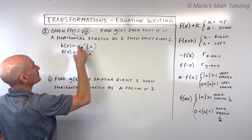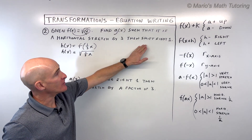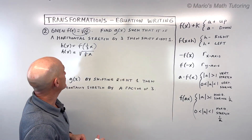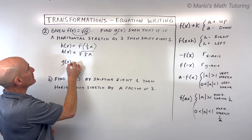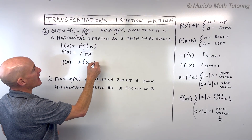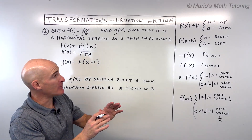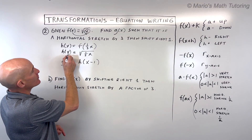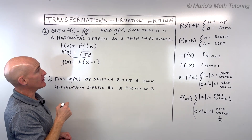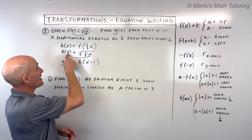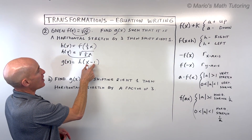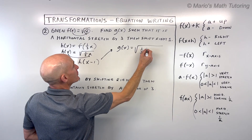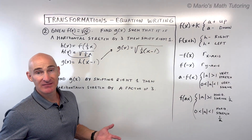Now the next step is to shift right one. Shifting right or left uses the notation grouped with the x. So g of x equals h of x minus one — why minus one? Because it's the opposite: minus one actually shifts it right one. Whatever's in the parentheses goes in place of x on the right, so we replace x with the quantity x minus one. That gives us g of x equals the square root of one third times the quantity x minus one. That's your final result.